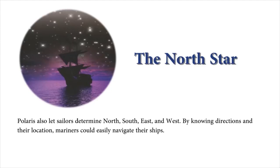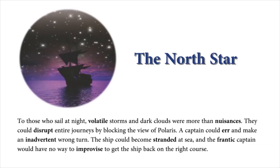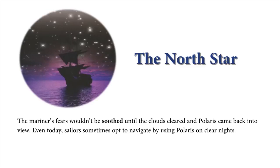By knowing directions and their location, mariners could easily navigate their ships. To those who sail at night, volatile storms and dark clouds were more than nuisances. They could disrupt entire journeys by blocking the view of Polaris. A captain could err and make an inadvertent wrong turn. The ship could become stranded at sea and the frantic captain would have no way to improvise to get the ship back on the right course. The mariners' fears wouldn't be soothed until the clouds cleared and Polaris came back into view.